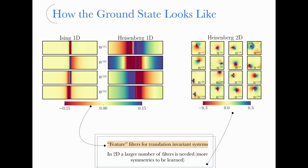Looking at those weights — the effective interactions in the classical equivalent model — they don't always immediately tell you something physically relevant. For example, in the 1D Heisenberg case the interactions are pretty long-ranged with no local structure visible. For the 1D Ising model there is some local structure even at the critical point. For the 2D Heisenberg model we again see some locality in those coefficients. However, in general we don't yet have a recipe to understand from those numbers what the physical features of the system are.